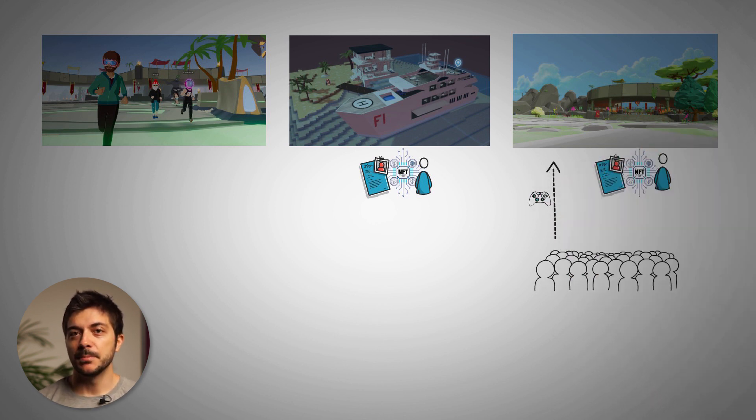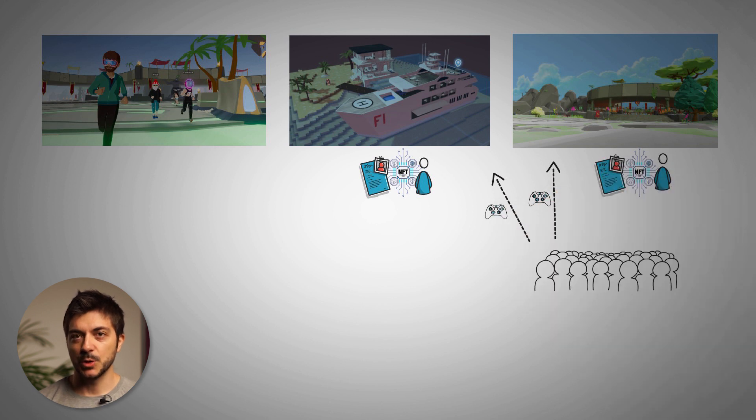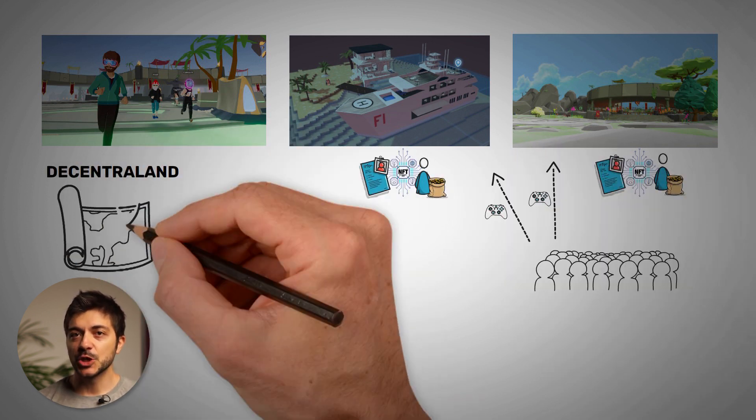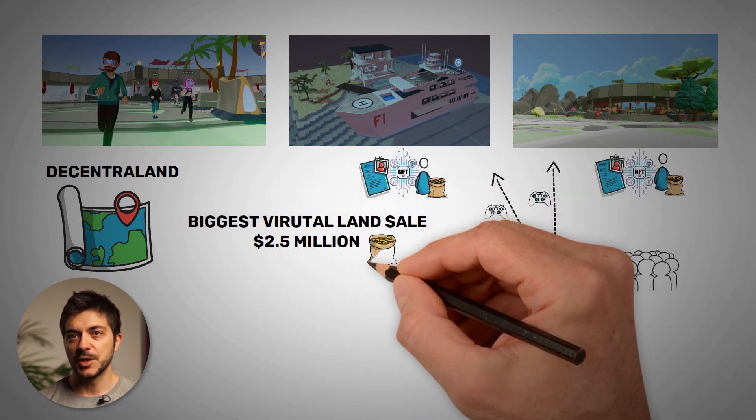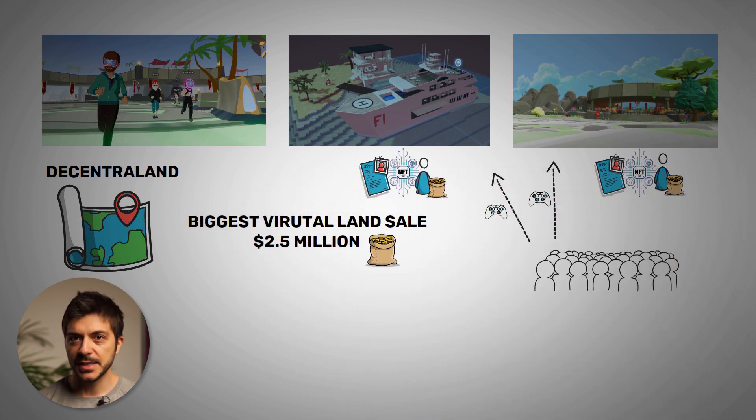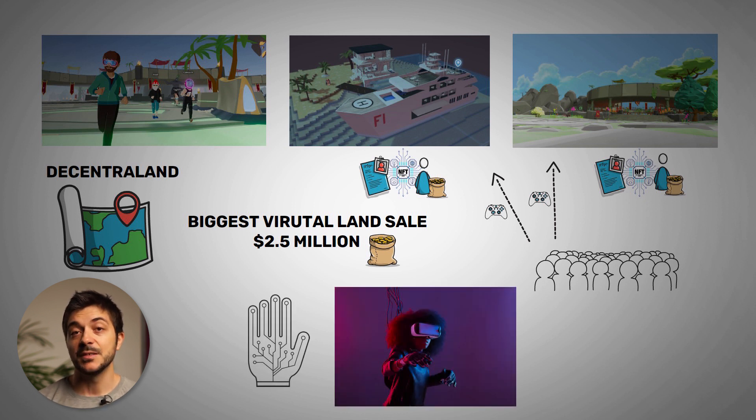Just last week we saw the biggest NFT land sale in one of those Metaverse projects called Decentraland. This virtual land was sold for 2.5 million dollars and the graphics of this product are super ugly for my taste and this just tells us how early we are in this field. Imagine what would happen once we get a Metaverse which has ultra realistic graphics and the ability to feel and touch virtual elements.